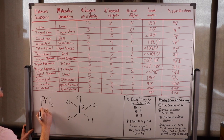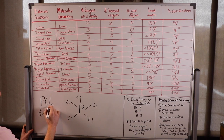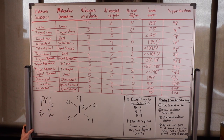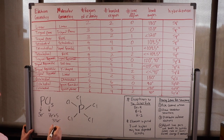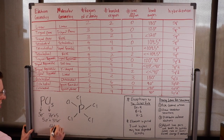Phosphorus contributes five valence electrons because it's in group 5A. Each chlorine contributes seven valence electrons because they're in group 7A, and there are five of them. So seven times five — chlorine contributes 35 total — plus the five from phosphorus, so we have 40 electrons to work with.